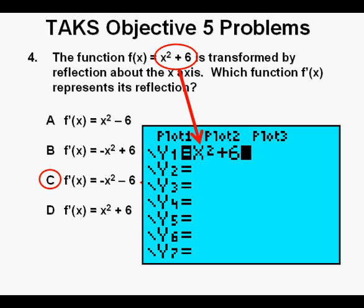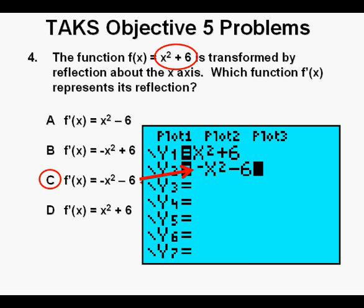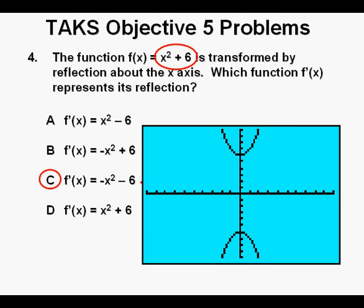Alternatively, or just to check our answer, we could go to our graphing calculator and enter y equals x squared plus 6. Then graph the function. Then go back to y equals and enter the answer for c and y2. Then graph both functions at once. And we see that they are reflections or mirror images of each other across the x-axis here shown in red, which again support c as our correct answer.